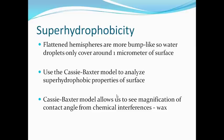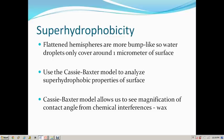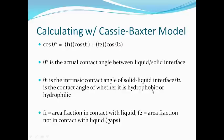We can use the Cassie-Baxter model to analyze the super hydrophobic properties of the surface. The Cassie-Baxter model allows us to see the magnification of contact angle from chemical interferences — in this case, wax. The equation is: cos θ* = F1·cos θ1 + F2·cos θ2, where F1 is the area fraction in contact with liquid and F2 is the area fraction not in contact with liquid, which is the gaps.